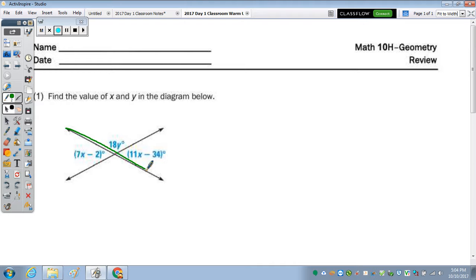So in the first question, if we take a look at these two intersecting lines, we have a pair of vertical angles which have one variable in them in terms of their measure. And we know that vertical angles are congruent, so 7x minus 2 equals 11x minus 34.